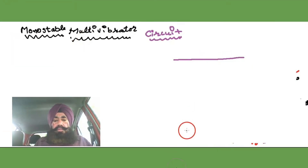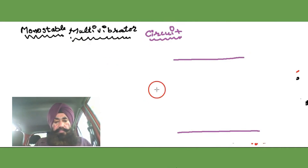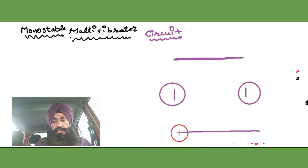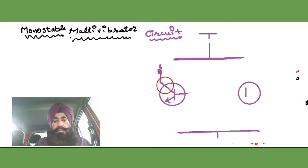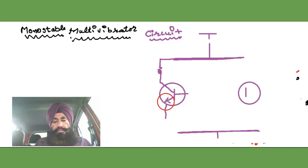Multivibrator. We are going to draw the circuit diagram where there are two transistors — BJT bipolar junction transistor Q1 and BJT Q2. This is a grounded line. Here the VCC supply is given through a switch, on and off. This one is the emitter, this one the collector, and this one is the base. Resistance is connected to the collector, and then attached to the supply VCC. The emitter is grounded.